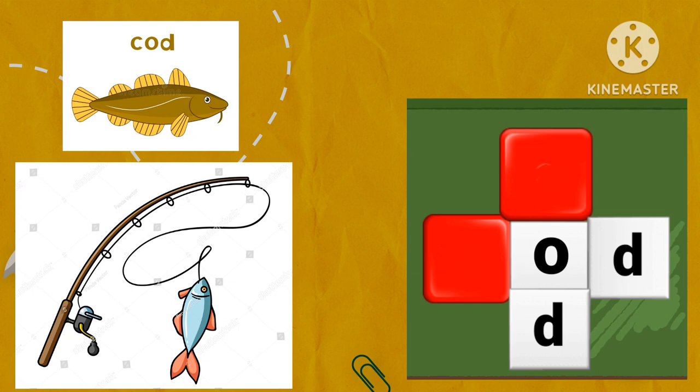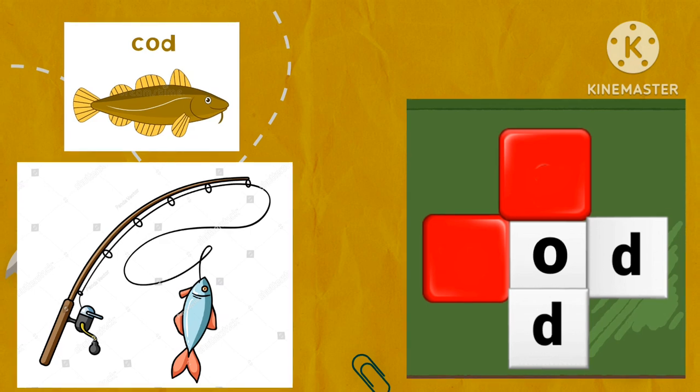Cod, rod. Which letters are missing? Letter C and letter R. Drop letter C for cod and letter R for rod. Well done.